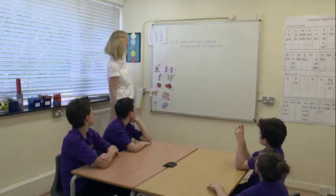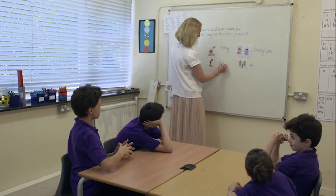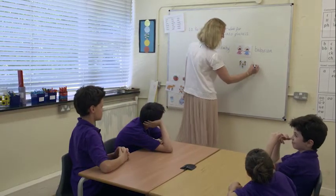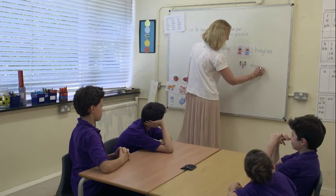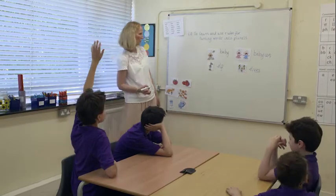Plurals obviously come up a lot when children are writing — they're always having to write plurals, so it is an important piece of learning. The important thing is also to teach children that there are certain rule breakers. It's important that children have rules, but with the really common exceptions they learn those, perhaps as a standalone lesson — learning about those words which do break rules.